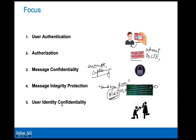We will also cover aspects of user identity confidentiality. Consider the scenario of Princess Diana and a group of paparazzi trying to find out where she is so they can go there and take photographs. The main idea of the system is to ensure that the identity of the user is not made available to anyone snooping around.